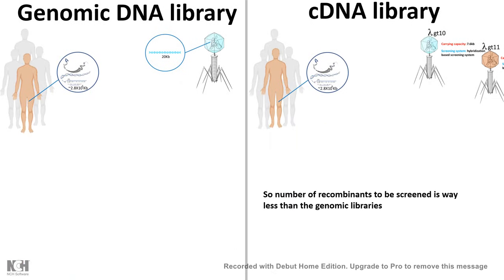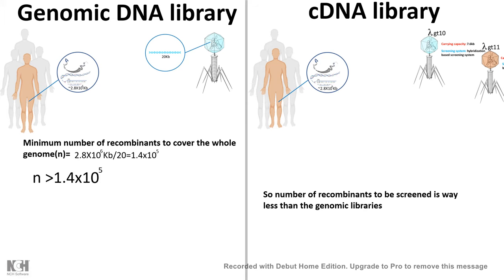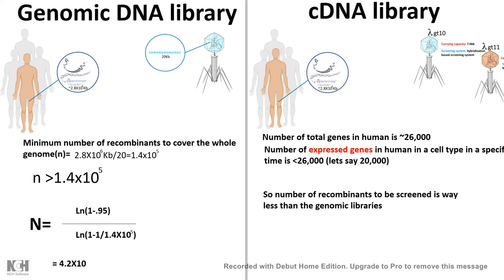Now let's talk about how many recombinants we need to screen in a genomic DNA library to find our gene of interest. For the human genome, which is 2.8 × 10⁶ kilobase pairs, with an insert size of approximately 20 kb, we have to screen a minimum of 1.4 × 10⁵ individual recombinants. In reality, the number is much higher — around 4.2 × 10⁵ recombinants.